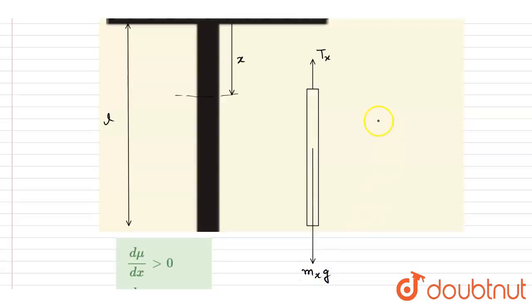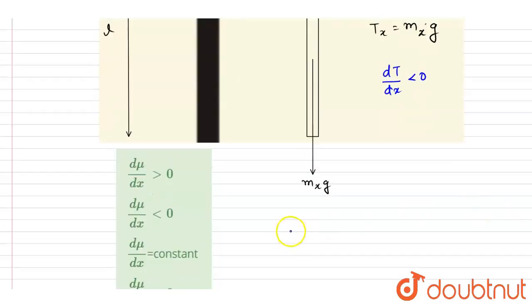So this mass is decreasing, right? So tension will also decrease. So we will say that tension is decreasing with x.